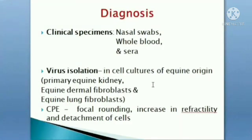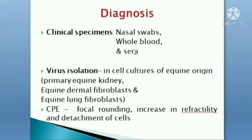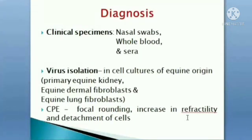The cytopathic effect includes focal rounding, increasing refractivity, and detachment of cells. Cells prepared in the Roux flask or tissue culture flask will detach from the surface. Normally cells adhere to the surface, but upon virus infection there is increased refractivity — a shining from the cells — followed by detachment and focal rounding. This is the specific cytopathic effect.